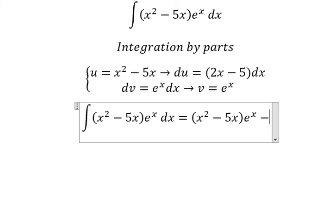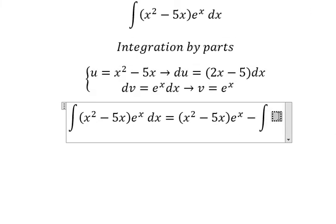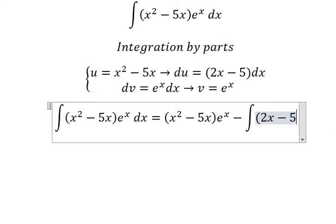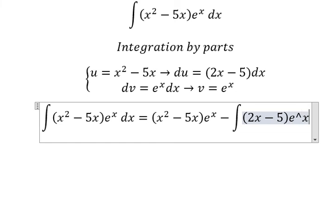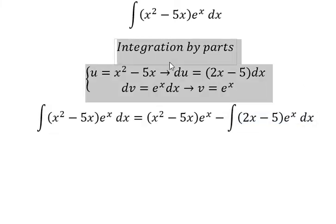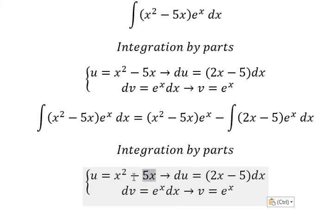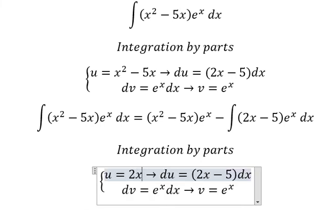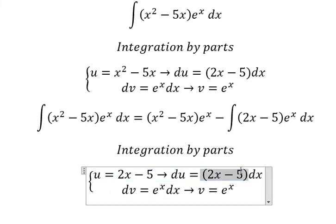So we have the integral of (2x minus 5)e to the power of x dx. Now we continue integration by parts again, but this one we change into 2x minus 5.